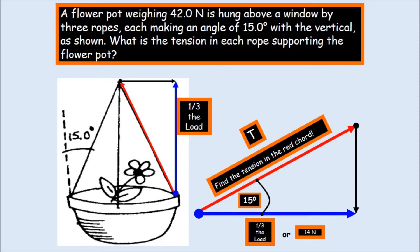A flower pot weighing 42 newtons is hung above a window by three ropes, each making an angle of 15 degrees with the vertical as shown. What is the tension in each rope supporting the flower pot? It's going to have 42 divided by three because you have three lines. And that's going to be 14 newtons will be the blue line.